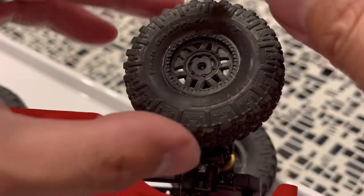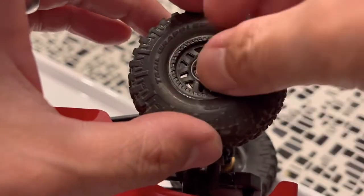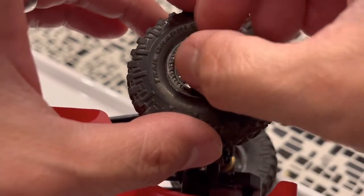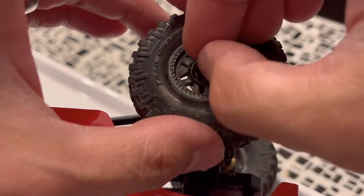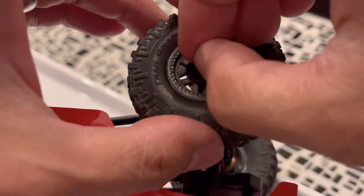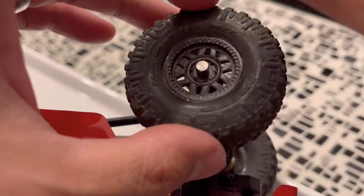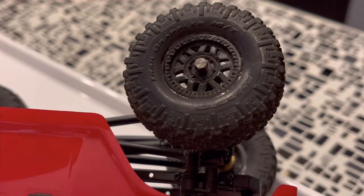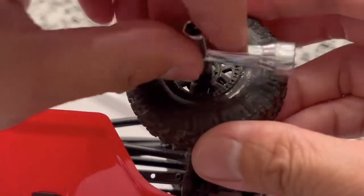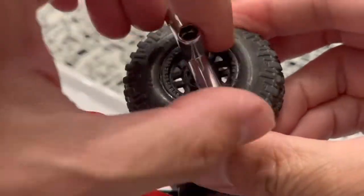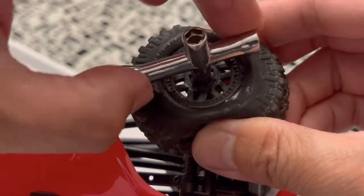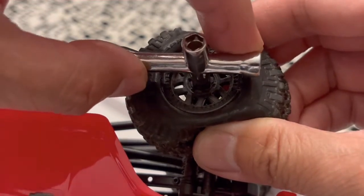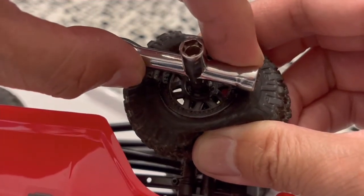That goes on here and I'd recommend that you tighten it by hand first so that you're not cross threading, because you can feel if it's cross threaded or not. We're going to get this tool and tighten that up. You don't want to tighten it so much that it's going to strip, but you don't want it to fall off either.